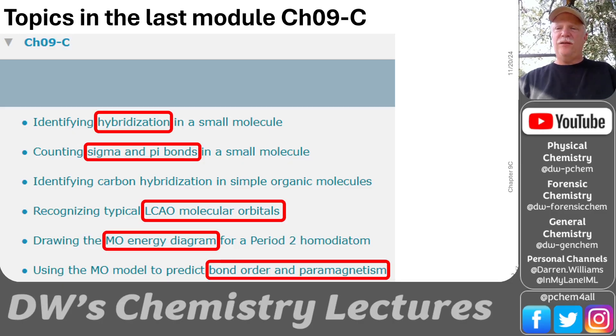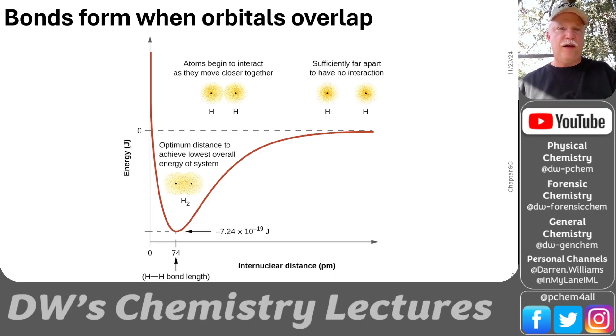The topics in the last module of our course, in chapter 9, module C, we're going to be talking about hybridization, sigma and pi bonds, different molecular orbitals, and so on. This first lecture is really going to be on bullet point number 1. I'm having a hard time with the advancing of the slides. Okay, here we go.